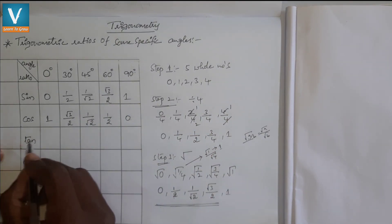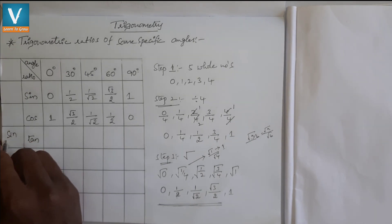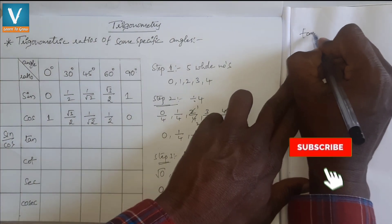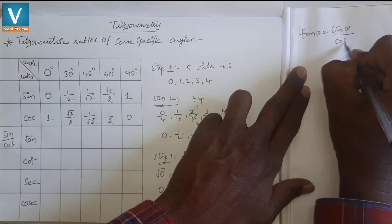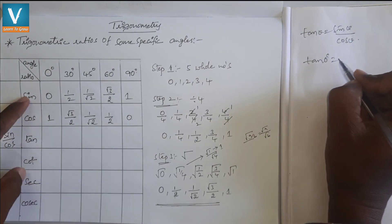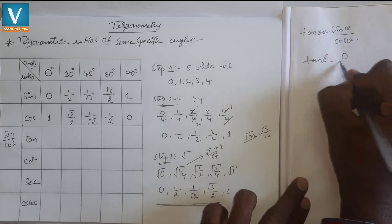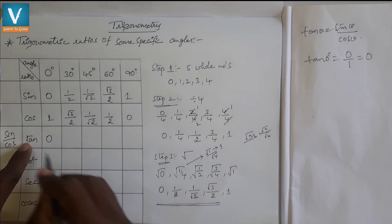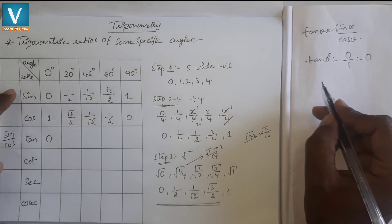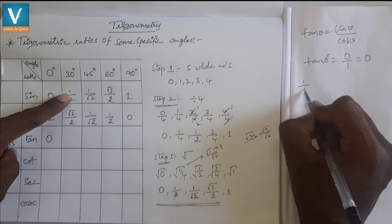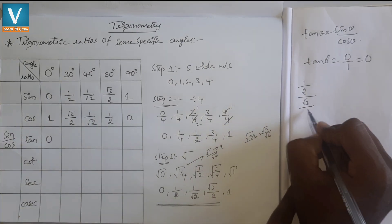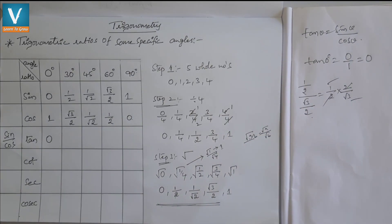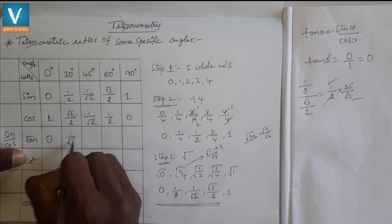For tangent values, we know that tan θ = sin θ / cos θ. To find tan 0°: sin 0° / cos 0° = 0/1 = 0. To find tan 30°: sin 30° / cos 30° = (1/2) / (√3/2). The 2s cancel, giving 1/√3. So tan 30° = 1/√3.